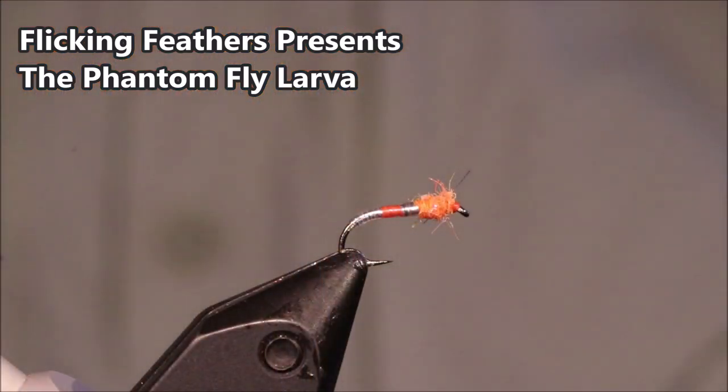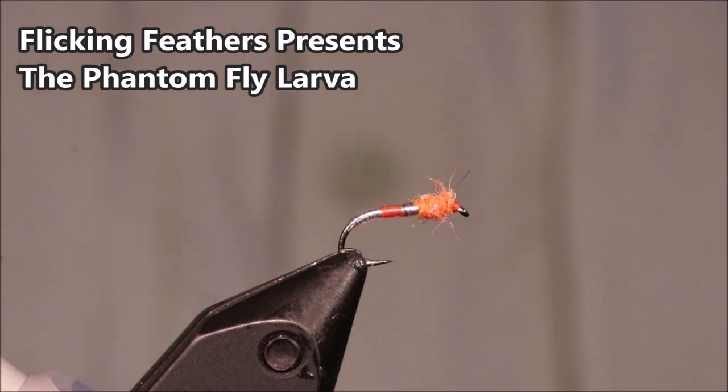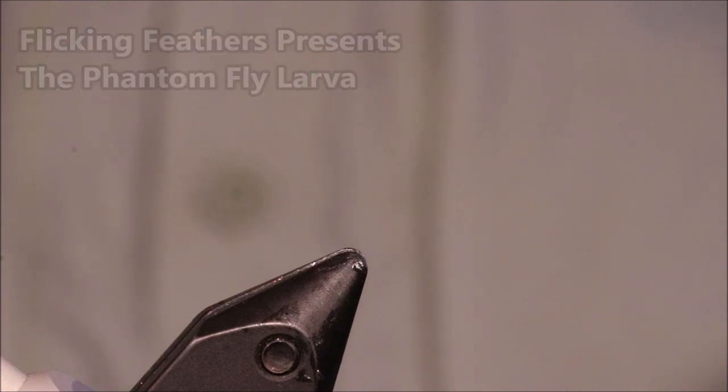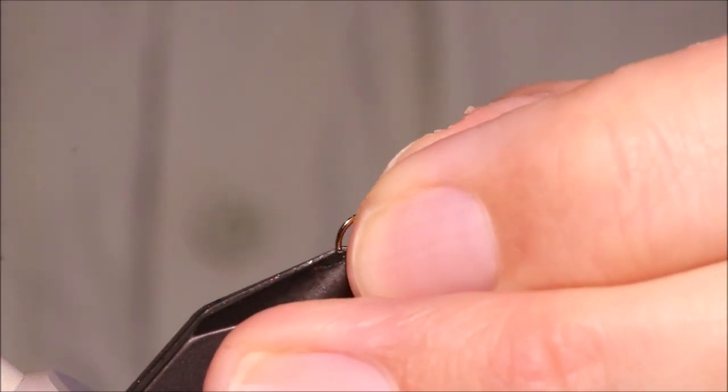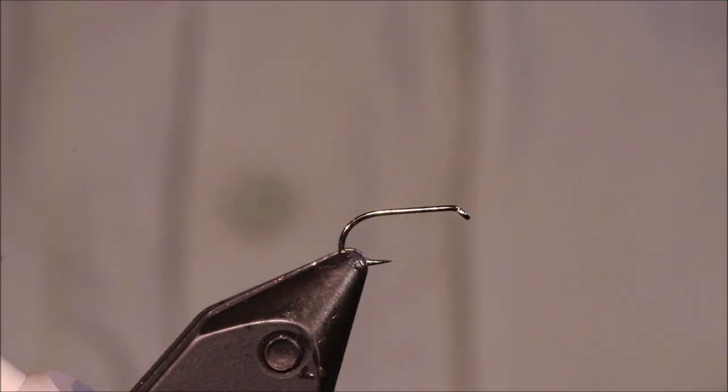Hi everybody, Martin at FlicknFeathers again today. I'm tying this in another wee still water fly for you, this is a phantom fly larva. Phantom fly is a small insect to wing fly similar to a midge. As always I'll put a materials list in the description along with a link to the Patreon page for anyone that wants to support the channel, get access to the members-only content as well as being entered into the giveaways.